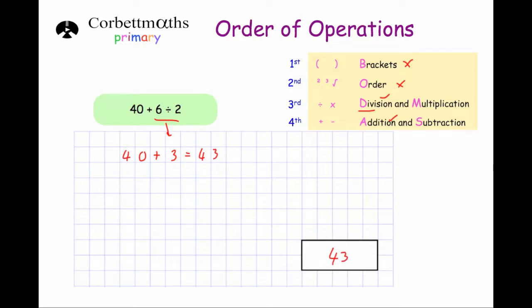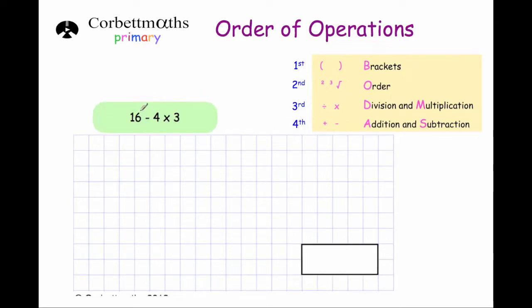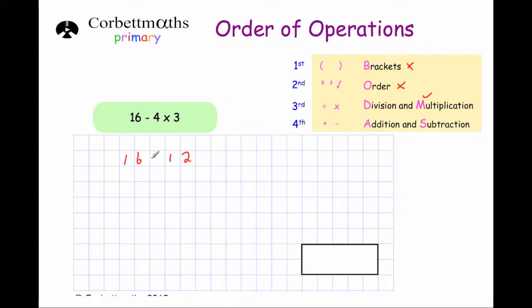Our next example is 16 minus 4 times 3. Again we need to do the correct order of operations. There's no brackets, no squaring or cubing, but there is a multiplication, so we do that next. 4 times 3 is 12. Keeping the sum in the right order, we've got 16 minus 12. And 16 minus 12 is 4, so our answer is 4.